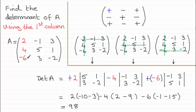We've got the elements 2, 4, minus 6 written in. Okay and then we just need to multiply those with the corresponding determinant.